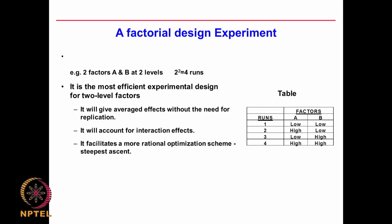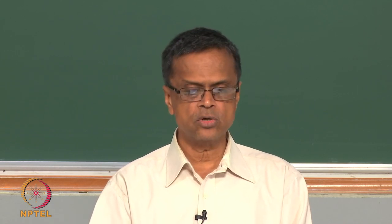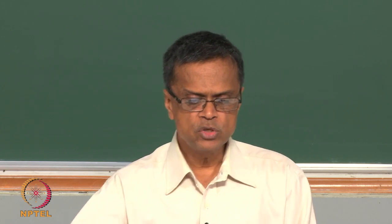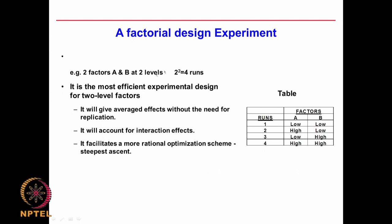In a factorial design experiment — like the previous drug/diet example — drug and diet each at 2 levels is called a 2^2 design. If I have 2 factors A and B at 2 levels, I call it a 2^2 design: the base 2 indicates the number of levels, and the exponent 2 indicates the number of factors or parameters. If I have 3 factors A, B, C it is a 2^3 design — 2 × 2 × 2 = 8 experiments.